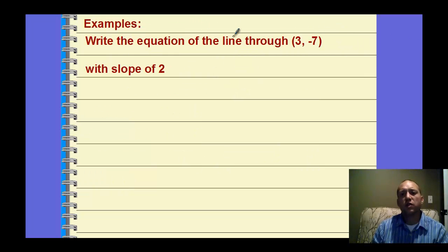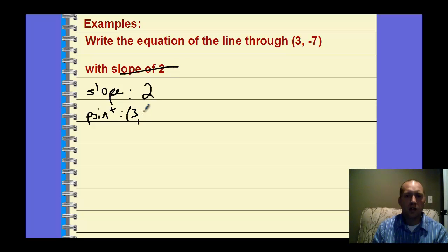So let's write the equation of a line through 3, negative 7 with a slope of 2. Whenever we're writing equations, we always need to find slope and a point. Those are the two things I'm always looking for. If I can find those two things, it's pretty easy to write an equation. So here, we're given the slope. The slope is 2. And the point, we're given the point. The point is 3, negative 7. So now we can write the equation of that.